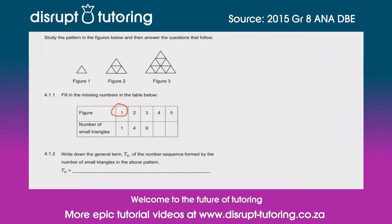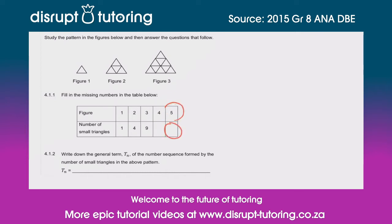They've very conveniently given us a table. In figure one we've got one triangle, in figure two we've got four small triangles, in figure three we've got nine small triangles. Figure four and figure five haven't been given to us, so the question is to fill in the missing numbers in the table — those two values.